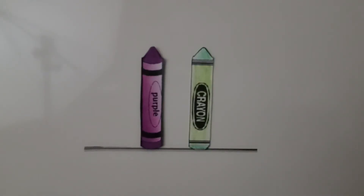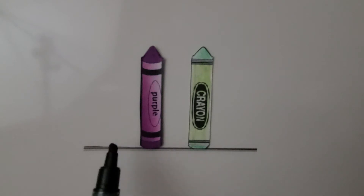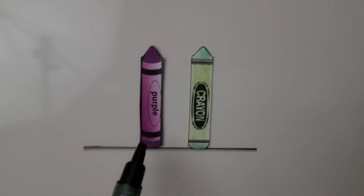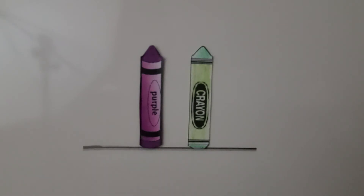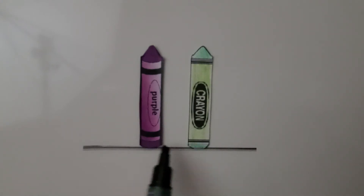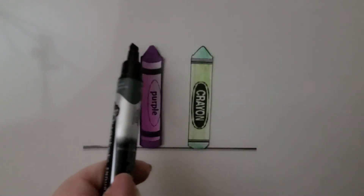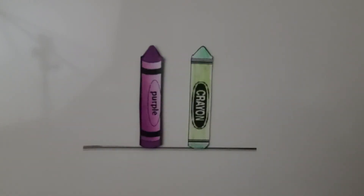Here are two crayons standing up. We can see they begin on the same line. Is the purple crayon taller than, shorter than, or about the same height as the green crayon? If you said about the same height, you're correct. They start at the same place and they both end at about the same height — they're about the same height.